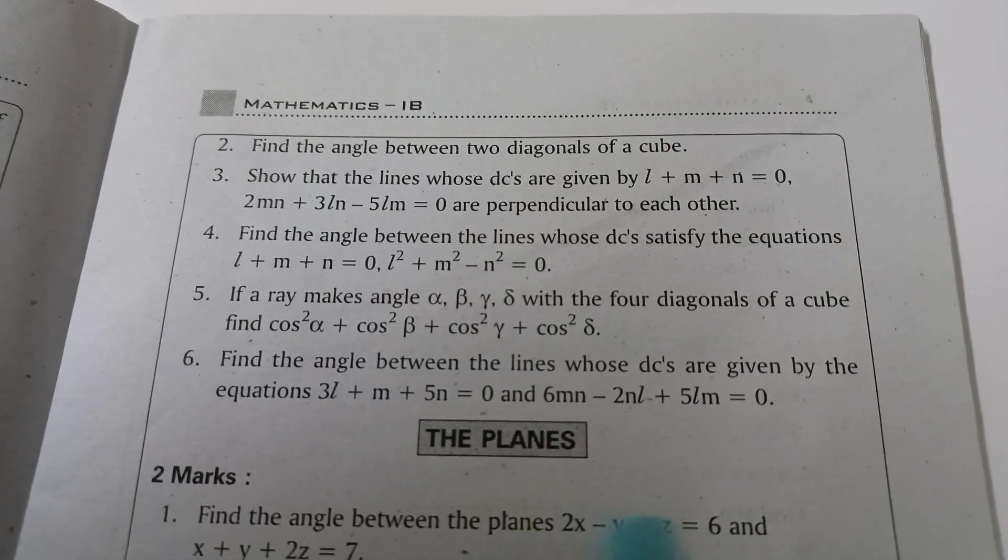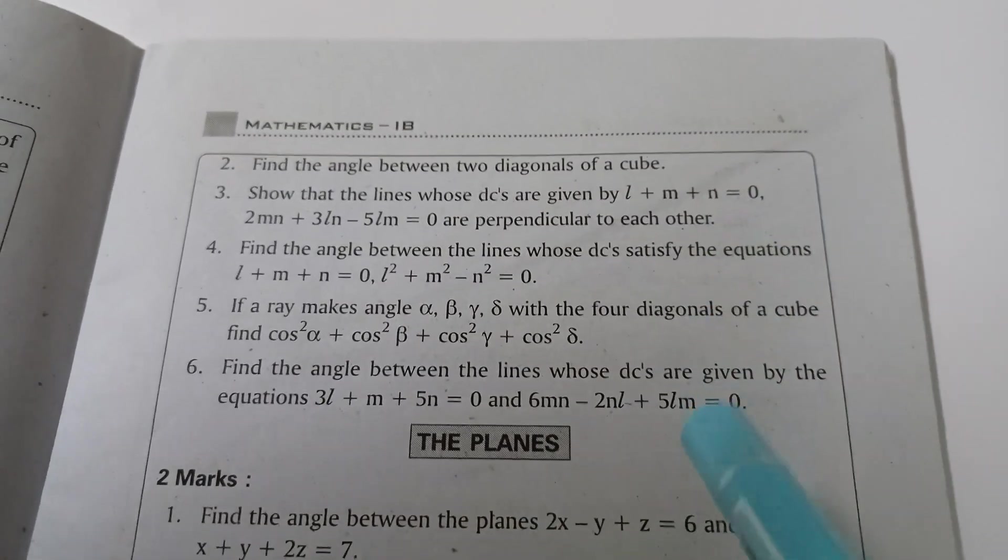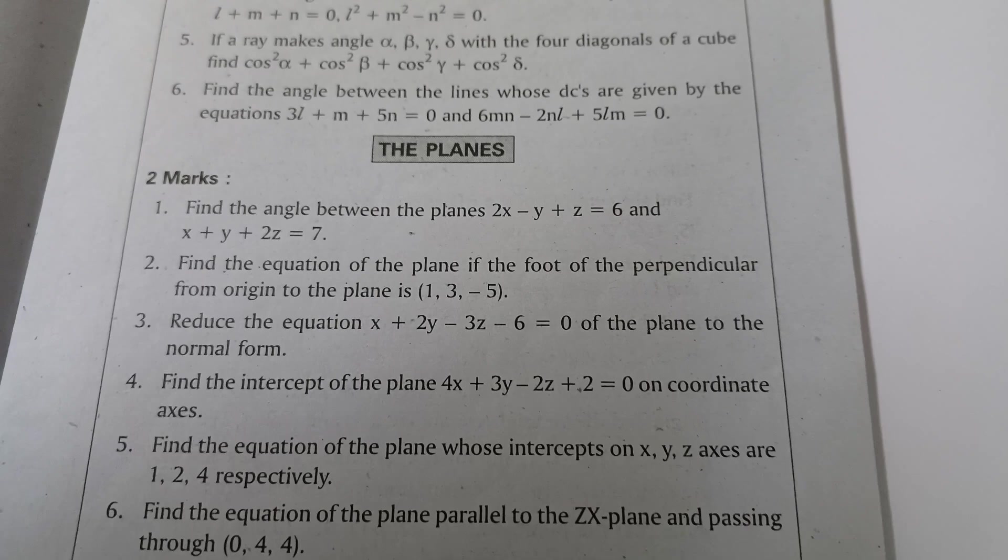And this theorem, then a theorem problem important. cos²α + cos²β + cos²γ + cos²δ. These are planes two marks.